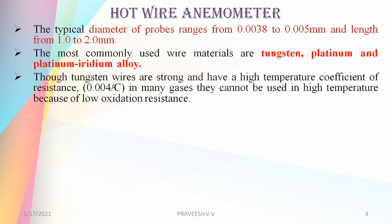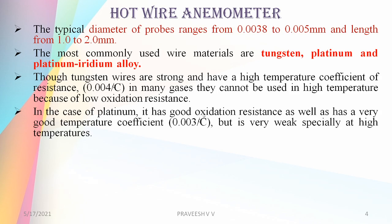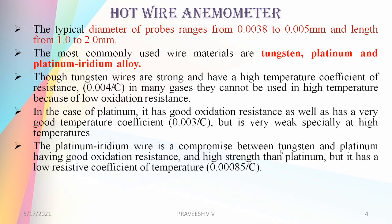Tungsten wires are strong and have a high temperature coefficient of resistance of 0.004 per degree Celsius. However, in many gases they cannot be used at high temperatures because of low oxidation resistance. Platinum has a temperature coefficient of resistance of 0.003 per degree Celsius, but it is very weak, especially at high temperatures, though its oxidation resistance is good. Platinum-iridium wires are a compromise between tungsten and platinum, having good oxidation resistance and higher strength than platinum.